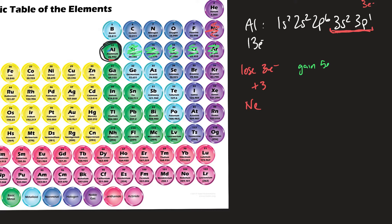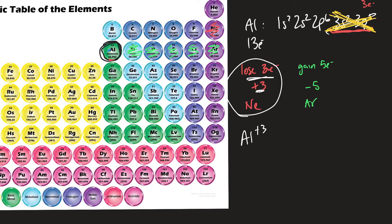Or it could gain five electrons to become a negative-five charge with the noble gas configuration of argon. It's easier to lose three than to gain five, since atoms prefer transferring the least number of electrons. So aluminum loses three, and the electron configuration of the Al3+ ion is 1s2, 2s2, 2p6 — which looks just like neon.